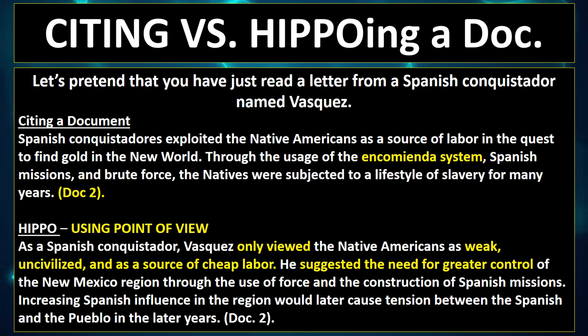Let me give you an example of the difference between just using a document and then HIPPOing a document. Let's pretend you've just read a letter from a Spanish conquistador named Vasquez. The first example shows just using the document — no point of view, no intended audience. The second example shows an actual use of point of view, where it says 'Vasquez only viewed the Native Americans as weak.' Pause and take a look. In one you're not seeing anything about historical context; in the other you are seeing elements of HIPPO being used.